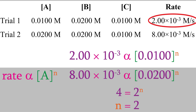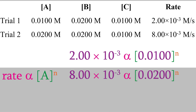Let's try that. If we divide rate 1 by rate 2, we get 1 quarter, or 0.25. If we divide the two concentrations, we get 1 half, or 0.5. In order to make this equation work out, our exponent must be 2 — exactly what we got when we divided the trials in the other order. So it doesn't matter which trial you use as the numerator and which is the denominator. I personally like to divide the larger numbers by the smaller ones, but feel free to do it either way. The only thing that matters is that whichever trial you use for the numerator when you take the ratio of the rates, you must use the same trial for the numerator when you take the ratio of the concentrations.